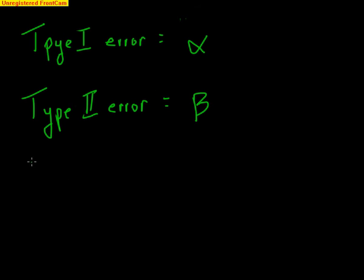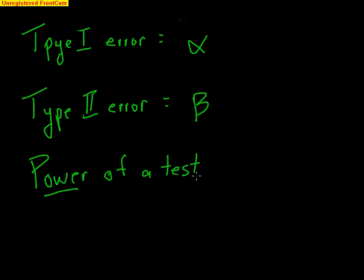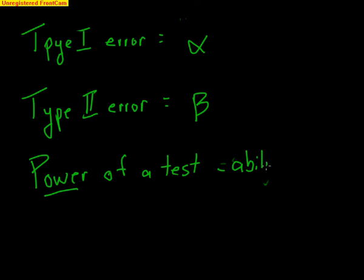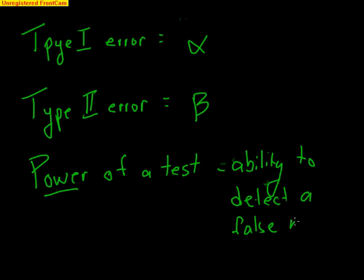There's one more thing we need to discuss: the power of a test. The power of a test is really important — it represents the ability to detect a false null hypothesis. Power and beta, which is Type II error, are complete opposites. Beta means the null is false but we fail to reject it, whereas the power of a test is your ability to detect a false null. If a null is false, you need to reject it — that is having a lot of power.